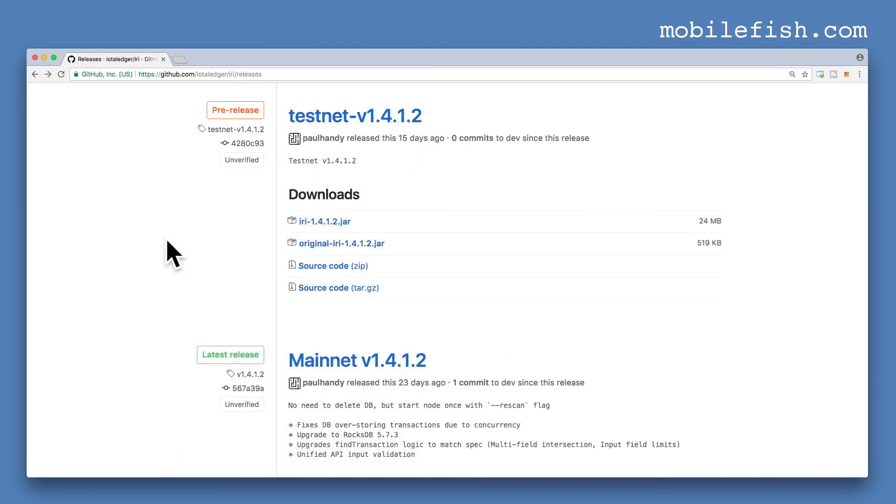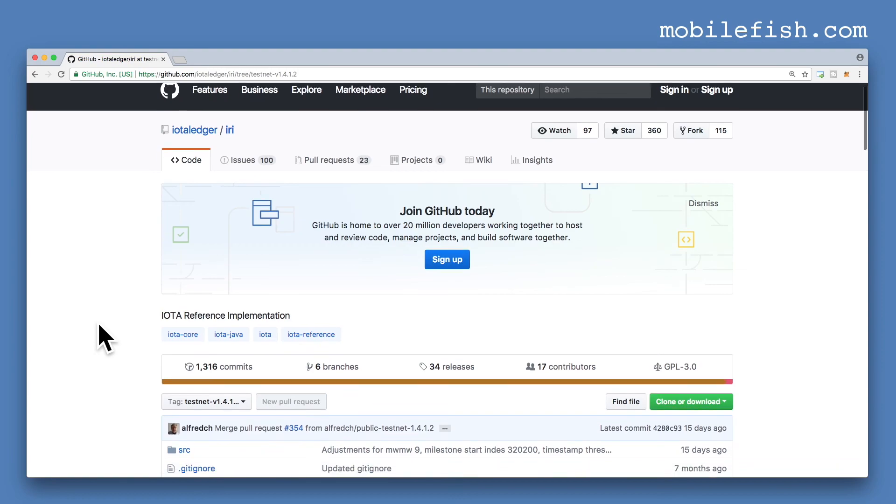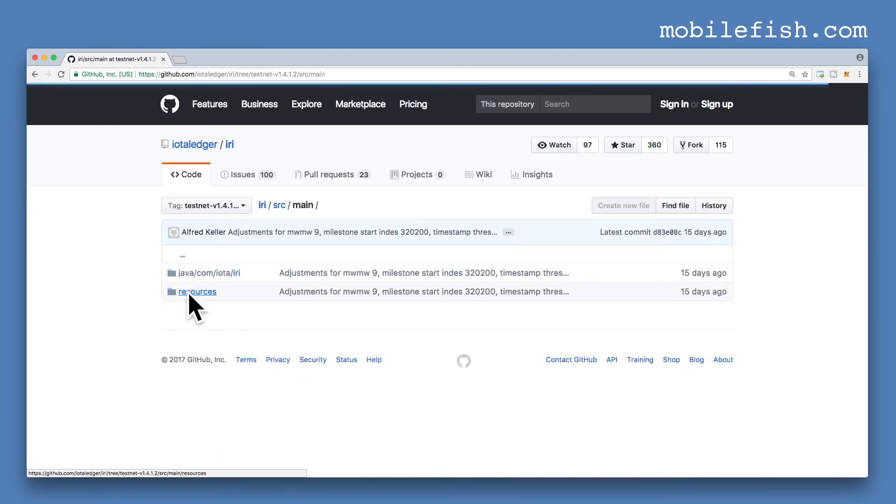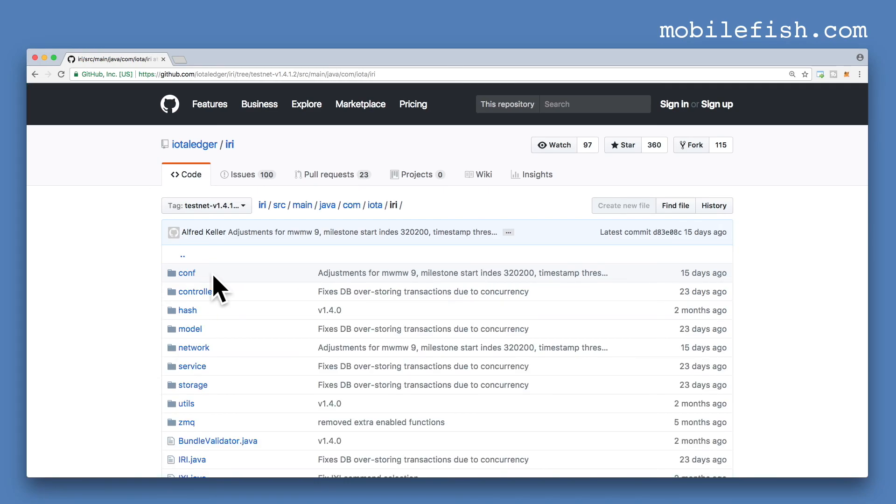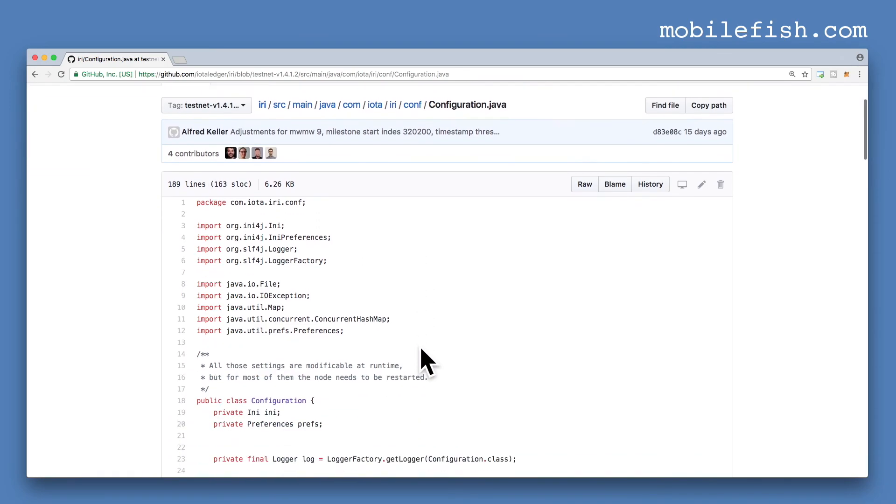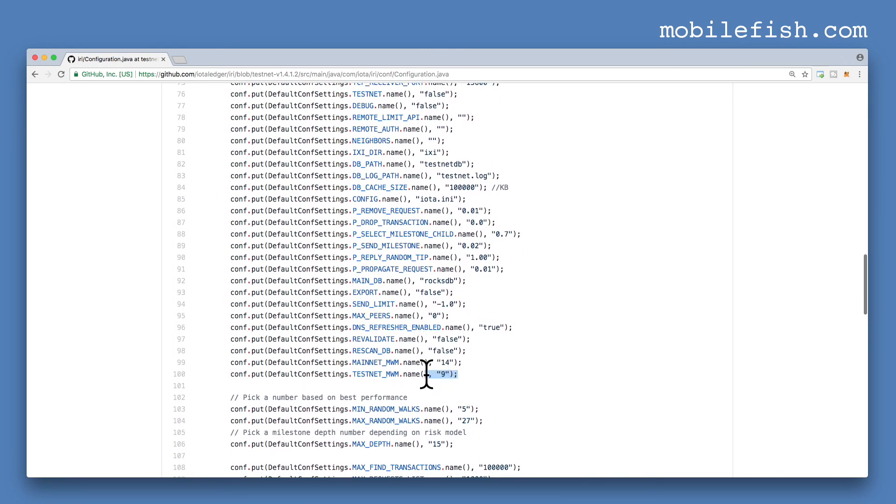If you want to know what the minimum weight magnitude is on the testnet, select the latest testnet release version. This is the latest testnet release version. Click on this link, click source, click main, click this link, click conf, and click this link. Scroll down. And as you can see over here, the minimum weight magnitude is 9 on testnet.